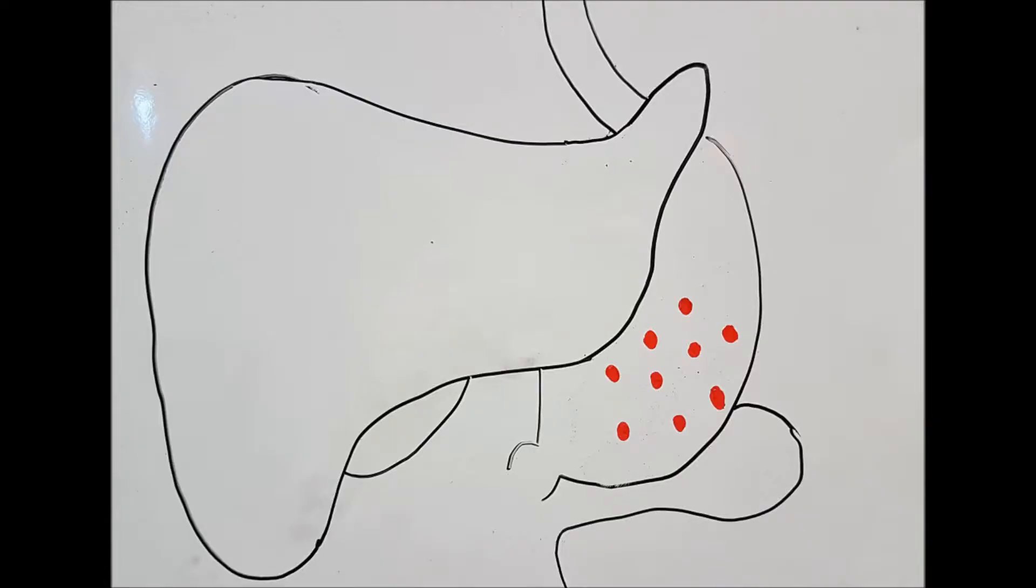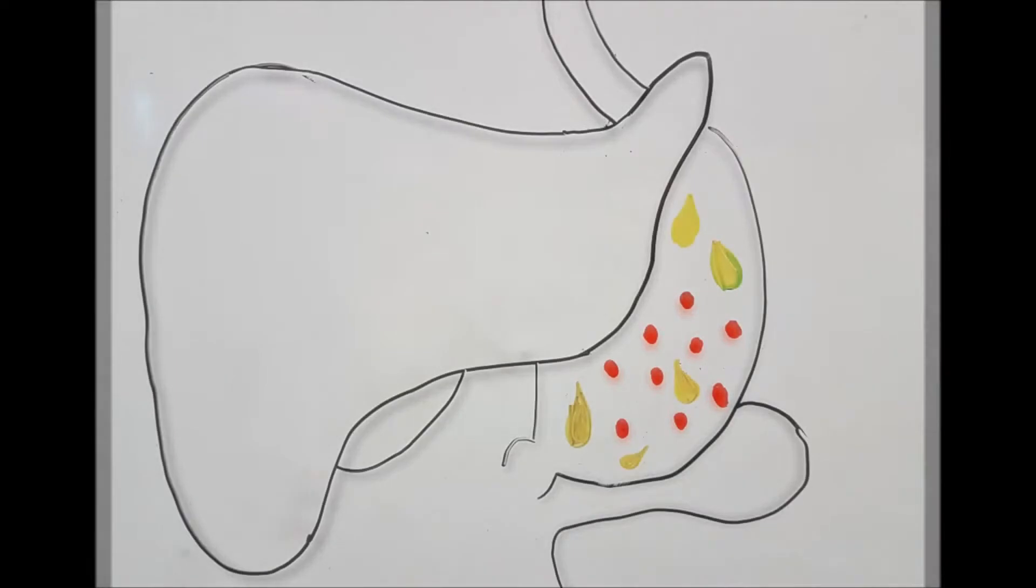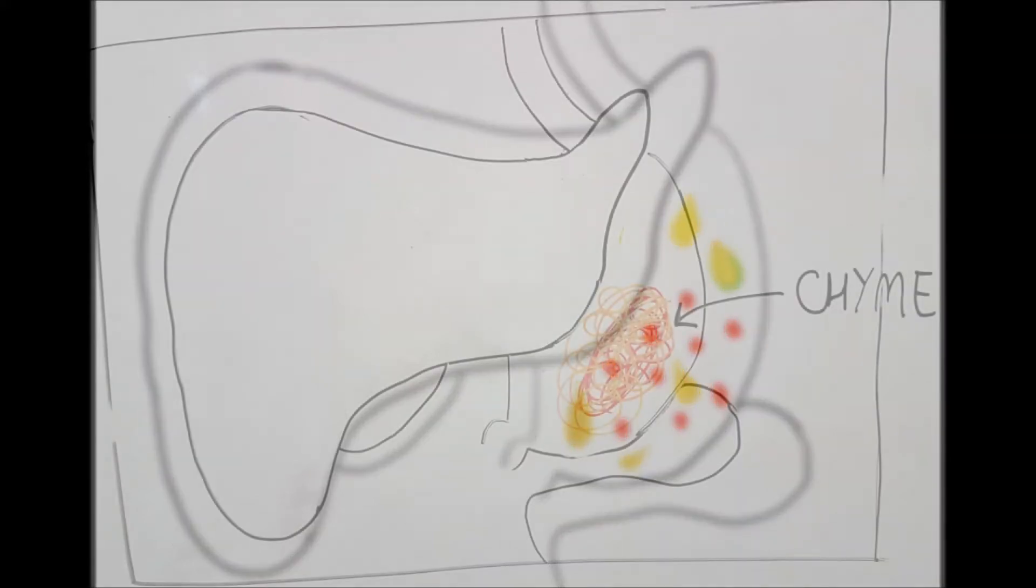The stomach walls pound the bolus and break it into small pieces. Later, some acids dissolve the food in order to take its proteins. While this is happening, the pancreas, the liver, and the gallbladder are creating liquids that help take the fats out. This process takes more or less 3 hours.